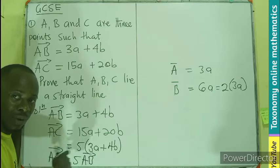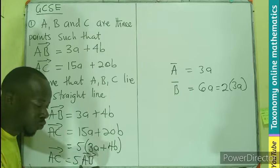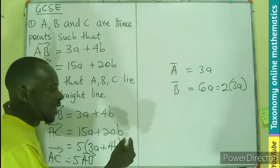Since there is a multiple, we can say they are parallel. Vector AC is parallel to vector AB. Therefore, the points A, B, and C are in a straight line.